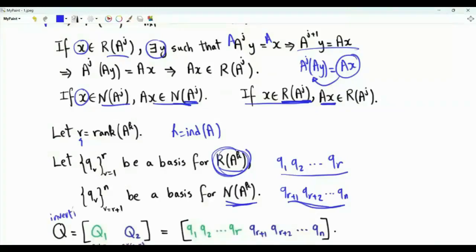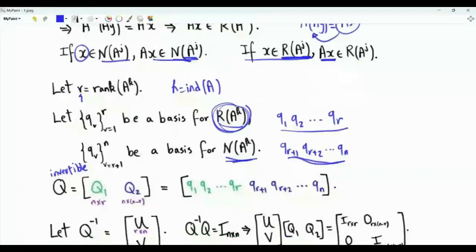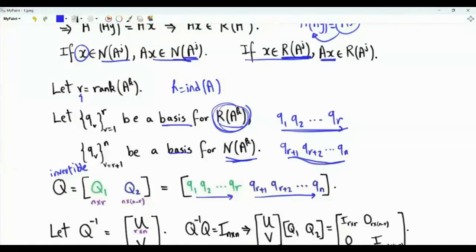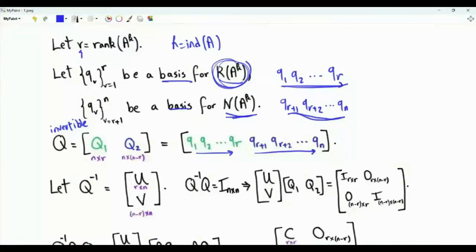Now we have invertible matrix Q. Its first r columns are denoted by the n by r matrix Q1 — those are the vectors q1 to qr. Then from qr+1 to qn, those are the columns of matrix Q2 of size n by n minus r. Q is an n by n square matrix that is invertible by the definition of a basis. Let Q inverse be partitioned into an upper r by n matrix denoted by U and a lower n minus r by n matrix denoted by V.